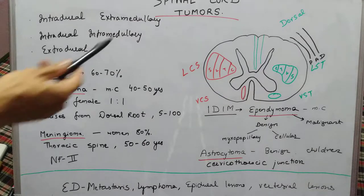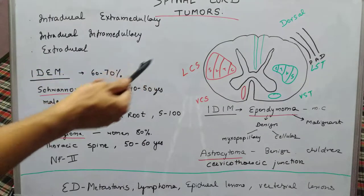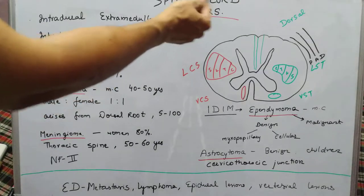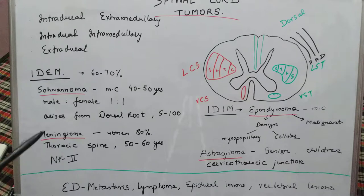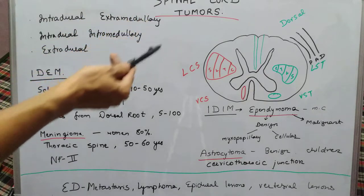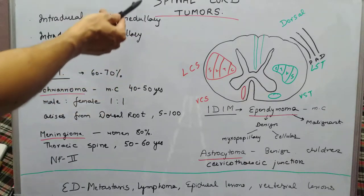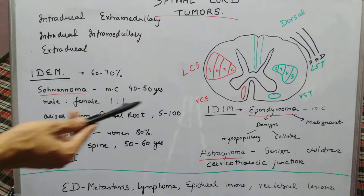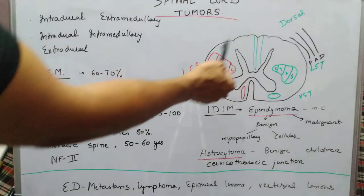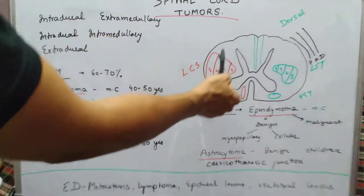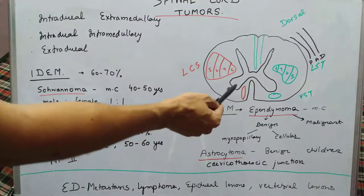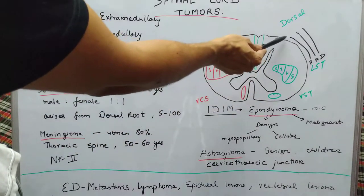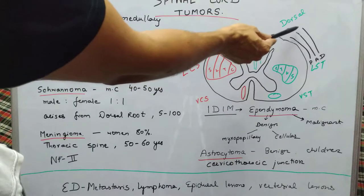This video covers spinal cord tumors — specifically tumors of the neural tissue, with no involvement of the bone. This is not about vertebral column tumors. To classify spinal cord tumors, we need to know the normal anatomy. In cross-section, the spinal cord includes medullary tissue; outside it we have the meninges — from inside to outside: pia mater, arachnoid mater, and dura mater.